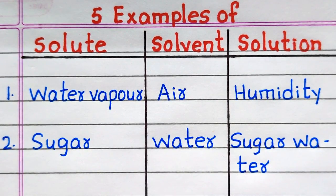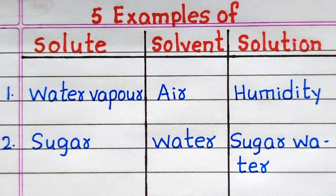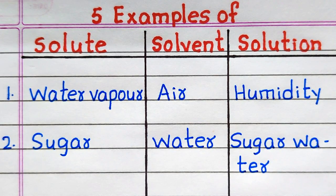The first example: solute is water vapour, solvent is air, solution is humidity. The second example: solute is sugar, solvent is water, solution is sugar water.